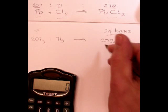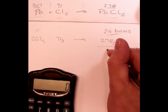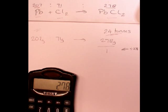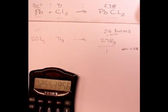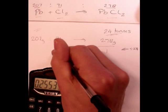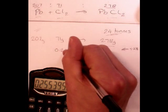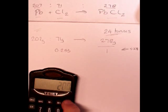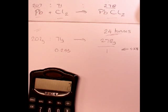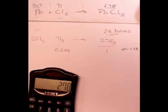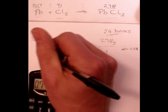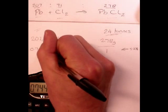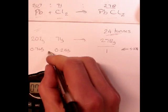278 divided by 278 is going to be 1. 71 divided by 278 is going to be 0.255. And 207 divided by 278 is going to be 0.745. So, that's my first ratio.